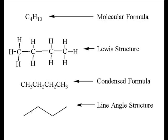Now, a single line literally means a single bond like we have between these carbons. So map the Lewis structure against the line-angle diagram.